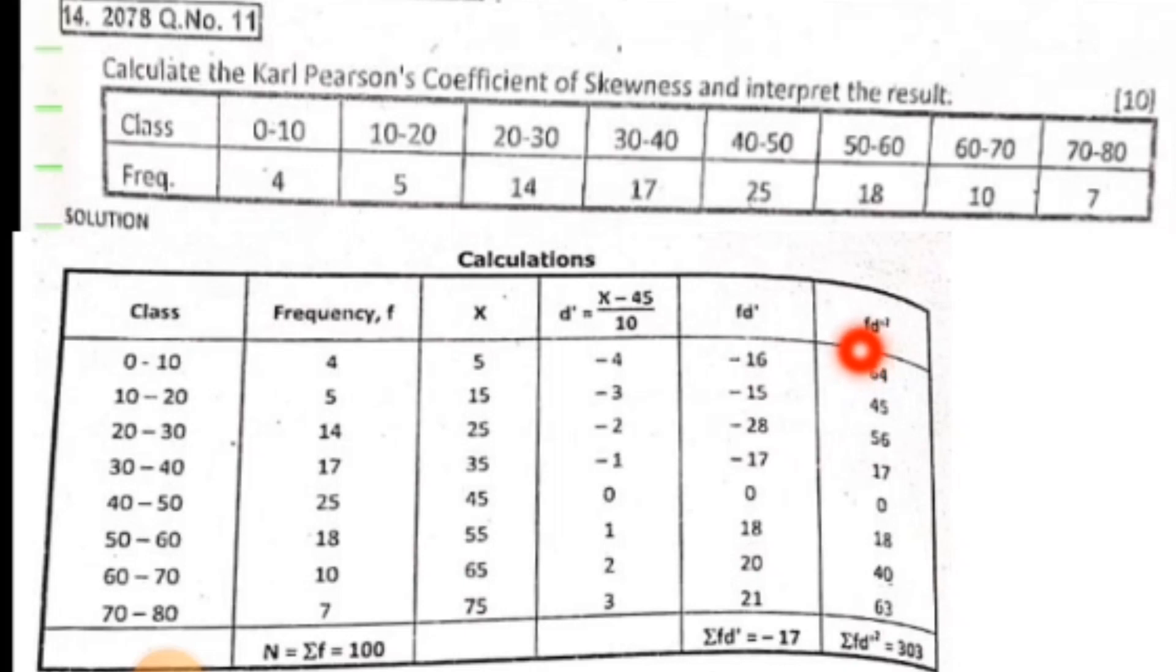Then the summation fd' square. We have fd' square values. Minus 16 into minus 4 equals 64. Minus 15 into minus 3 equals 45. Then minus 28 into minus 2 is 56. Then minus 17 into minus 1 is 17, and so on. The summation of fd' square equals 303, and summation fd' is minus 17.